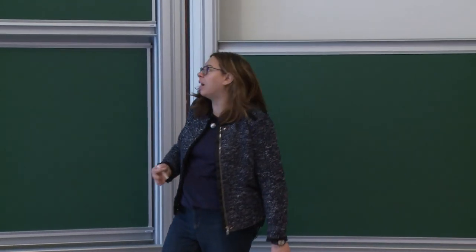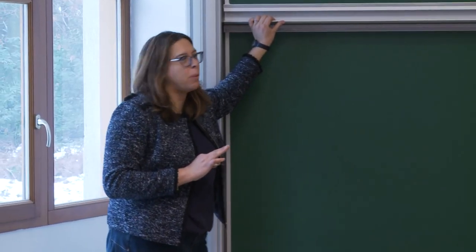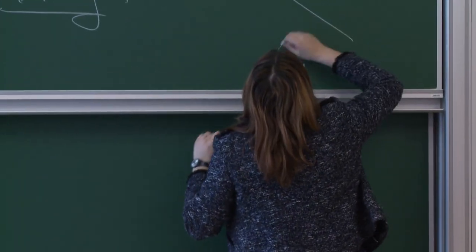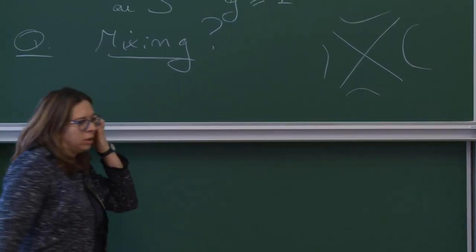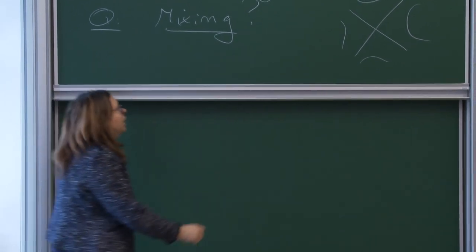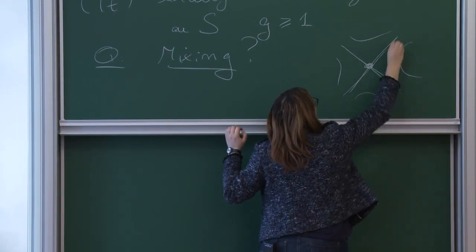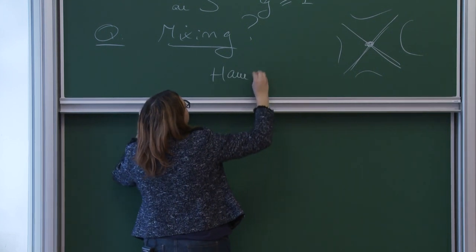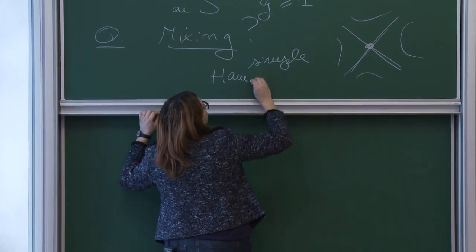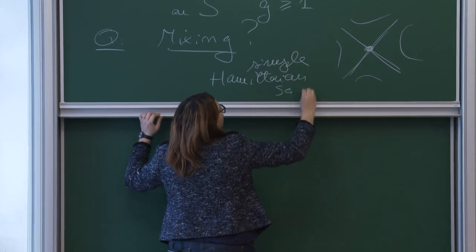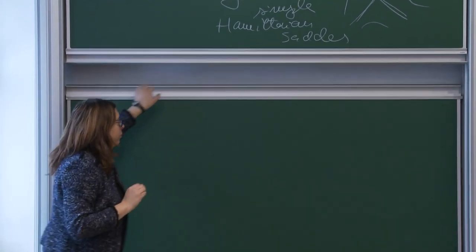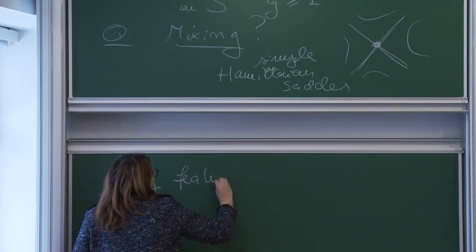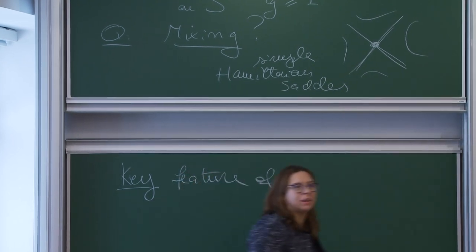Before I start with the basic definitions, I want to give you a spoiler or preview of what will go on. We said last time that if I have a surface of higher genus, or start from the torus in the Arnold case, we have singular points. We will look at Hamiltonian saddles — simple Hamiltonian saddles.